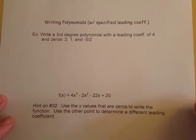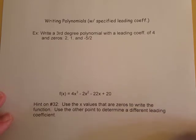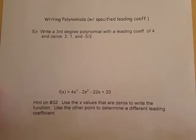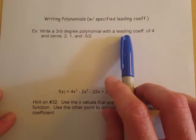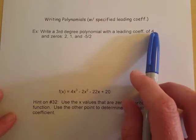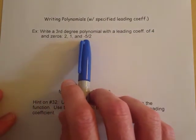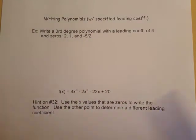This is the last example from 2.4 day one and it's similar to one that we did in 2.3, just that we have some specific information we need to fit in with our polynomial. So it says here write a third-degree polynomial with a leading coefficient of 4 and the zeros 2, 1, and negative five halves.